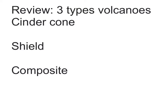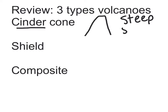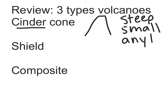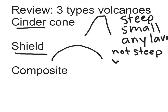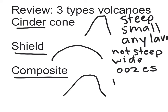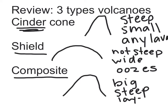Alright, let's review the three different types of volcanoes. First was the cinder cone — it's very steep, very small, and there's hardly any lava. Then we have the shield volcano, which is shaped like a warrior's shield — it's not steep, they're very wide, and the lava oozes out. And then we have the composite, which is very big and pretty steep, though not as steep as the cinder. It's made of layers and it's the most dangerous.